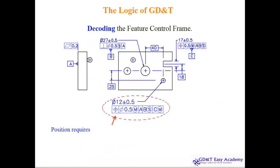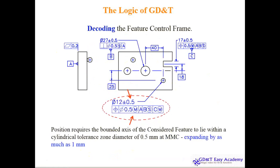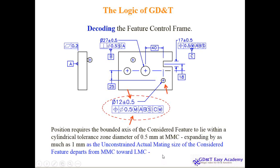The position requires the bounded axis of the considered feature — because the positioning is with respect to this axis — to lie within a cylindrical tolerance zone of diameter 0.5 at MMC, expanding by as much as 1 mm. This 0.5 and this 0.5 will be added. It can expand — not just the axis but also the diameter can deviate, and collectively it can deviate 1 mm.